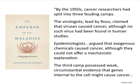By the 1950s, cancer researchers had split into three feuding camps. The virologists, led by Peyton Rous, claimed that viruses caused cancer, although no such virus had been found in human studies — for 50 to 60 years there were no viruses associated with human cancers. Epidemiologists argued that exogenous chemicals caused cancer, although they could not offer a mechanistic explanation — the chimney sweeps in England who fit down chimneys had higher incidences of scrotal tumors because the soot lining the chimneys is carcinogenic. The third camp possessed weak circumstantial evidence that genes internal to the cell might cause cancer.